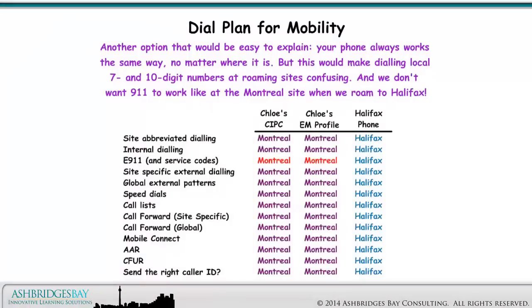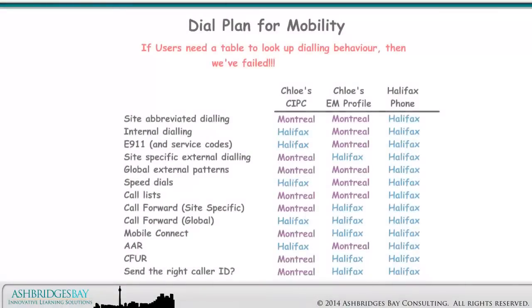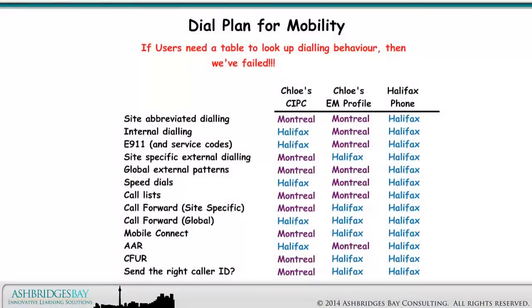Another option that would be easy to explain: your phone always works the same way, no matter where it is. But this would make dialing local 7 and 10 digit numbers at roaming sites confusing, and we don't want 911 to work like at the Montreal site when we roamed to Halifax. If users need a table to look up dialing behavior, then we've failed — it's an epic failure.